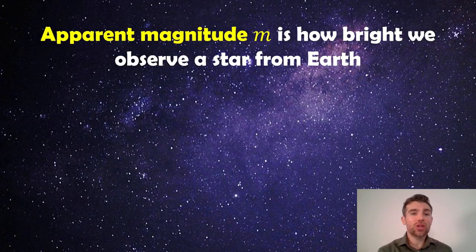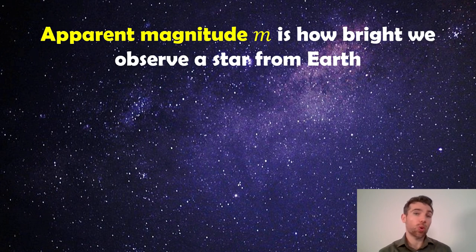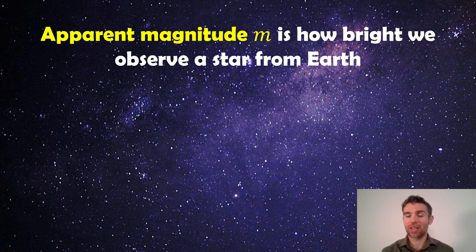Now the apparent magnitude, as I mentioned before, that's how bright the star will appear from Earth. So if we look out into the sky, like this nice image we have here, that's how bright the star will appear when we look at it.